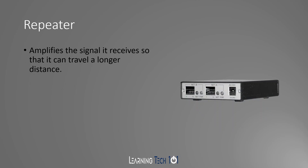Our last device is the repeater. It amplifies the signal it receives so that it can travel a longer distance. Most people won't see a cable repeater, but you've probably used a wireless repeater yourself. If you have a Wi-Fi extender that you're using to extend your wireless network into areas of your house with poor coverage, that's an example of a repeater — all it's doing is regenerating that wireless signal so it can go further than it originally could.